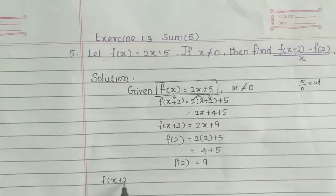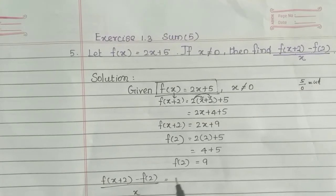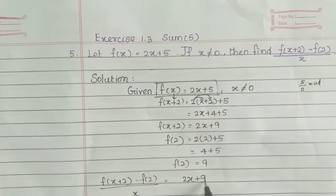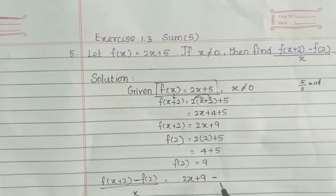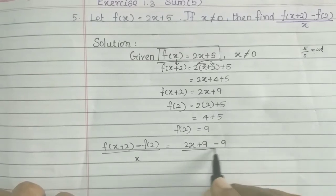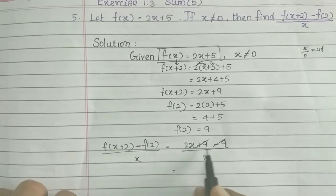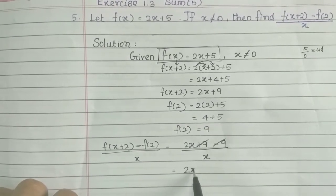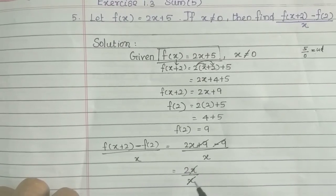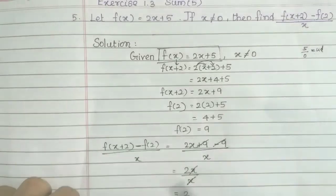Now, f of x plus 2 minus f of 2 divided by x. The value of f of x plus 2 is 2x plus 9. We have minus f of 2, which is 9. So 2x plus 9 minus 9 — the 9s cancel — leaving 2x divided by x. The x cancels, so that is equal to 2. The value of this function is 2.